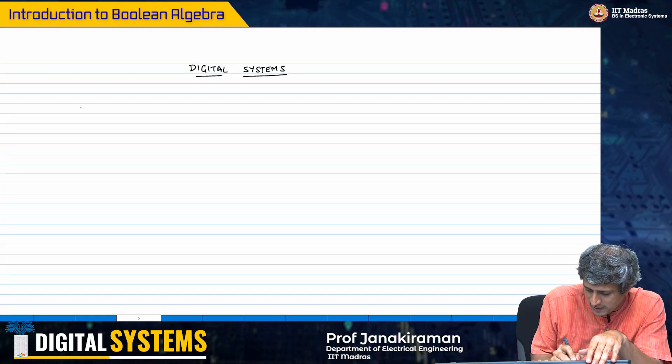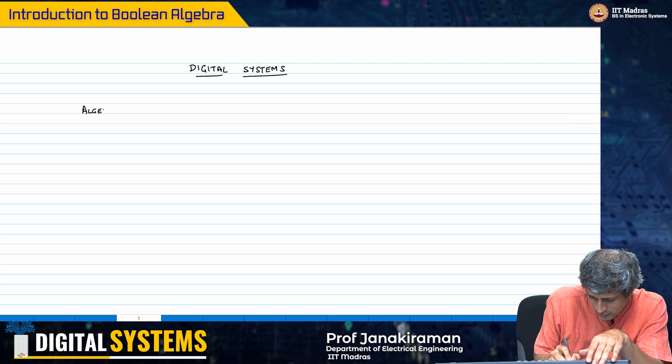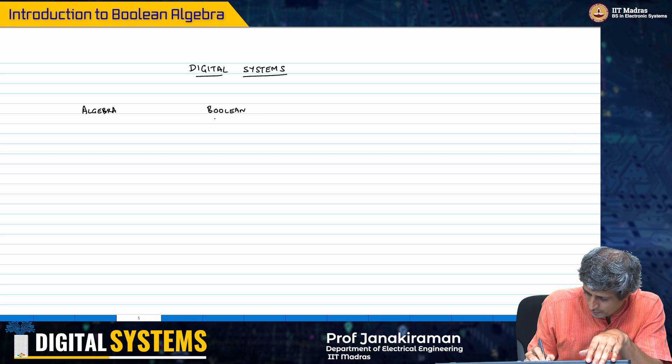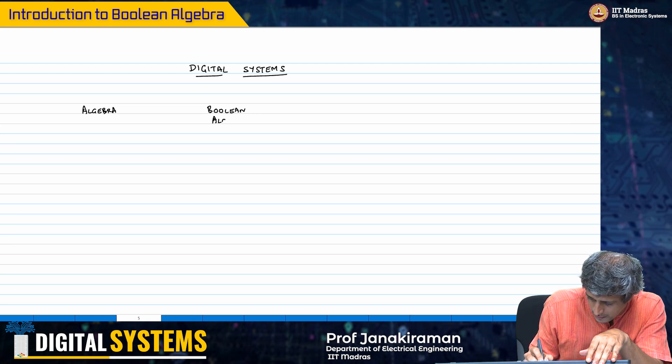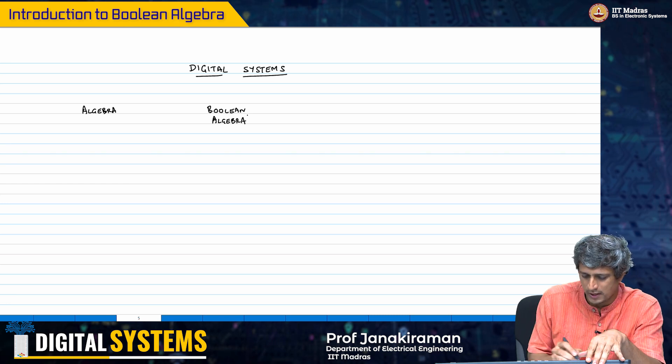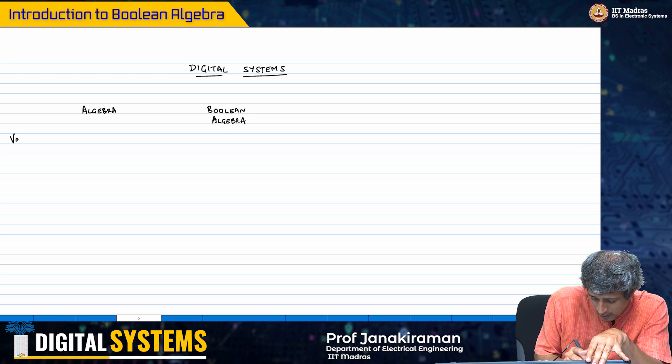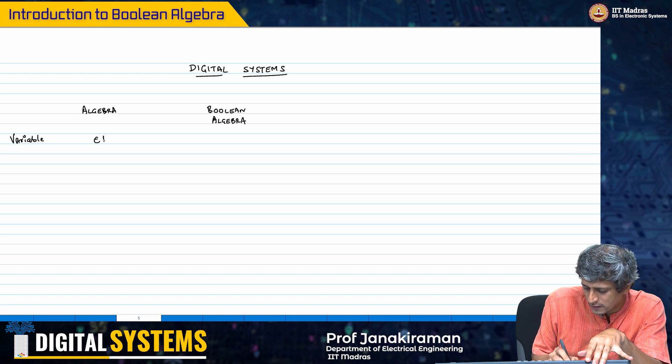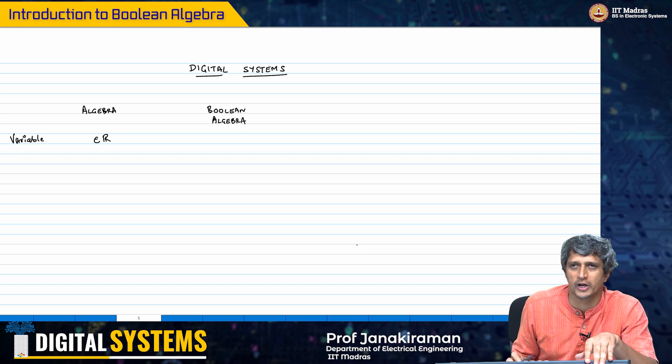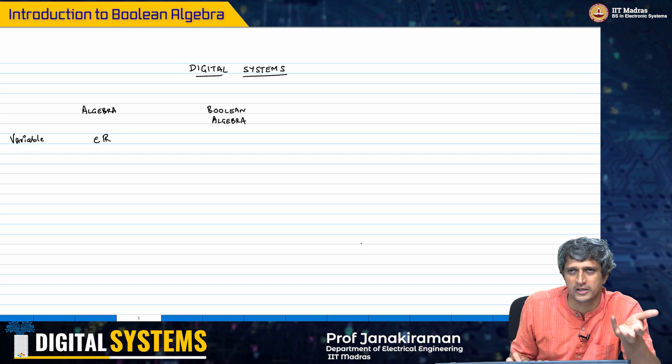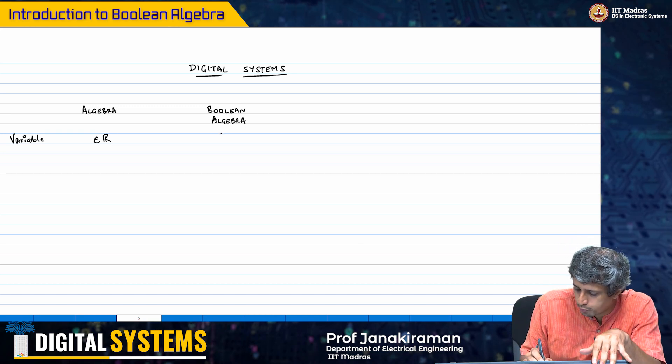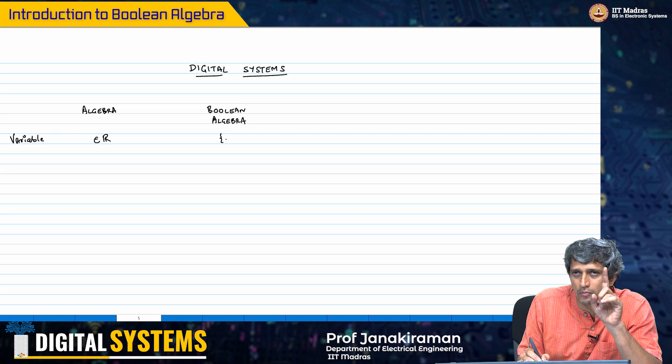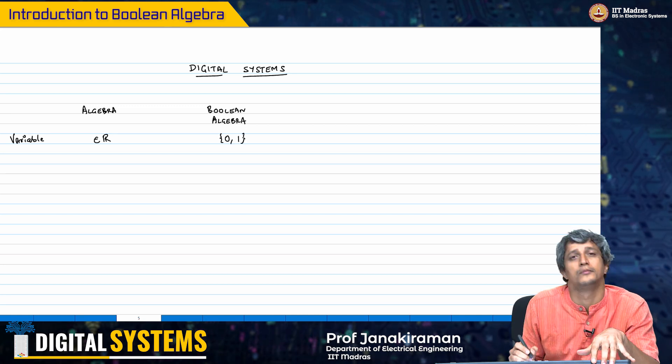In mathematics you have algebra, whereas here we are going to deal with Boolean algebra. Typically our variable in algebra can take any real value from minus infinity to infinity, or a subset of that - it could be integers, rational numbers. Whereas a Boolean variable in Boolean algebra will take what is known as digital values, which is either 0 or 1.